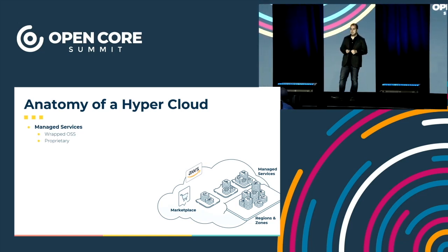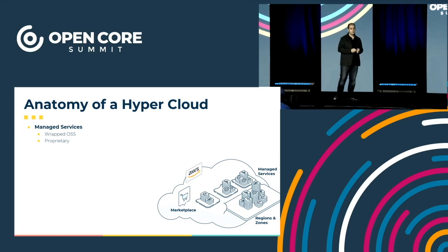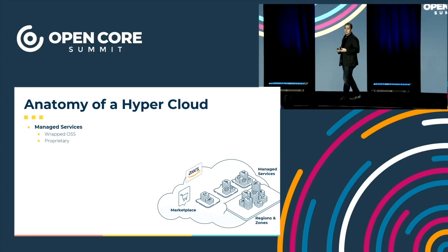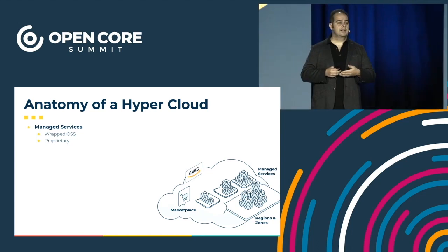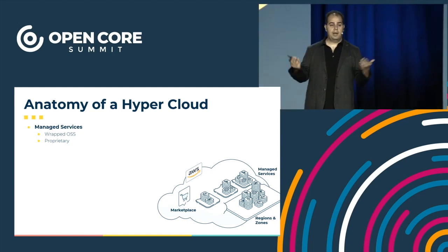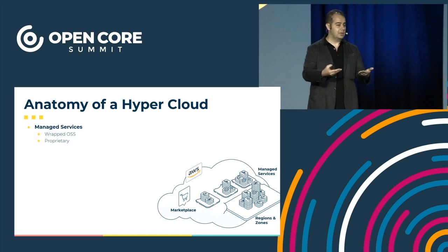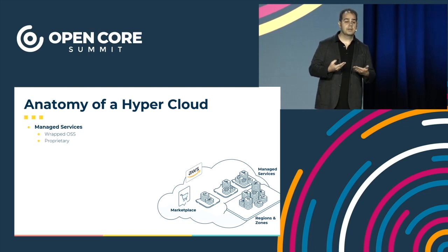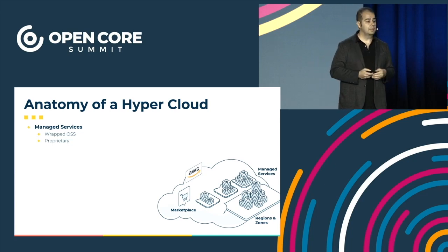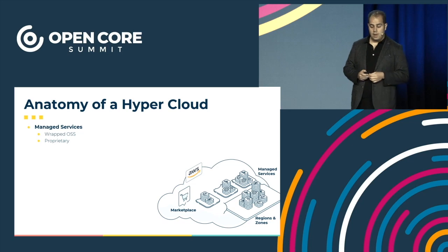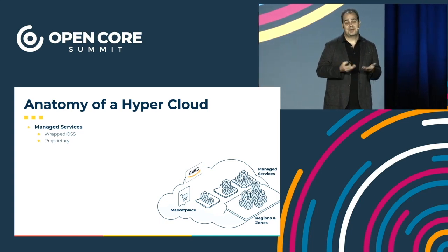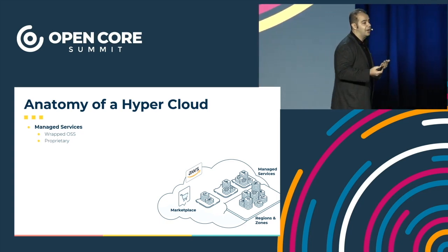There are typically two flavors of managed services that a typical hypercloud would provide. There are ones that, as we heard our friends at GitLab talk about, wrap OSS — essentially taking something like MySQL or PostgreSQL, wrapping it, integrating it into their platform and offering it as a managed service. And the other are essentially proprietary managed services — ones that they build internally, spending engineering effort and innovation cycles to make them formidable. Typically all these managed services are offered buffet style — you can pick which ones you want and use them by the hour or by gigabyte.